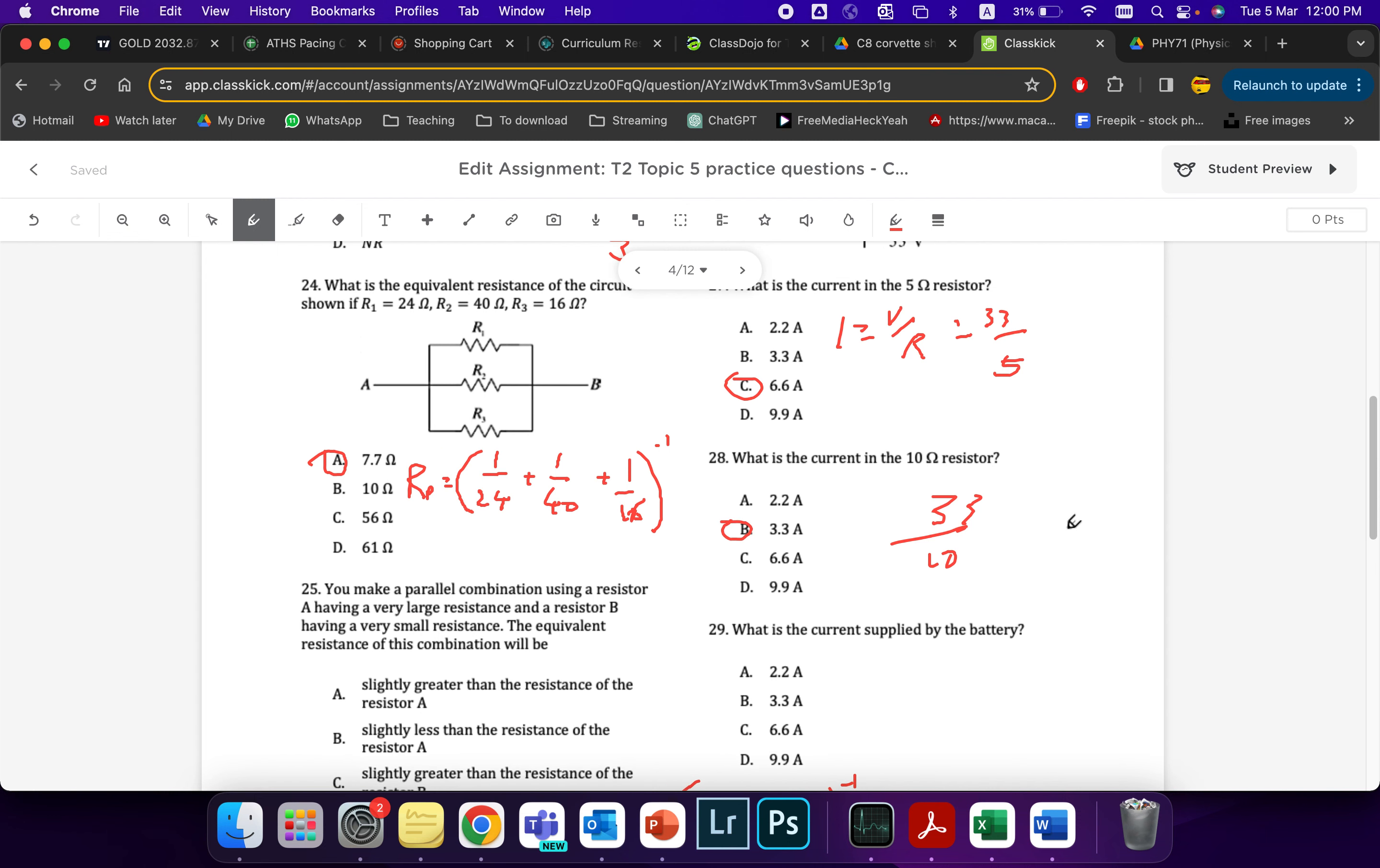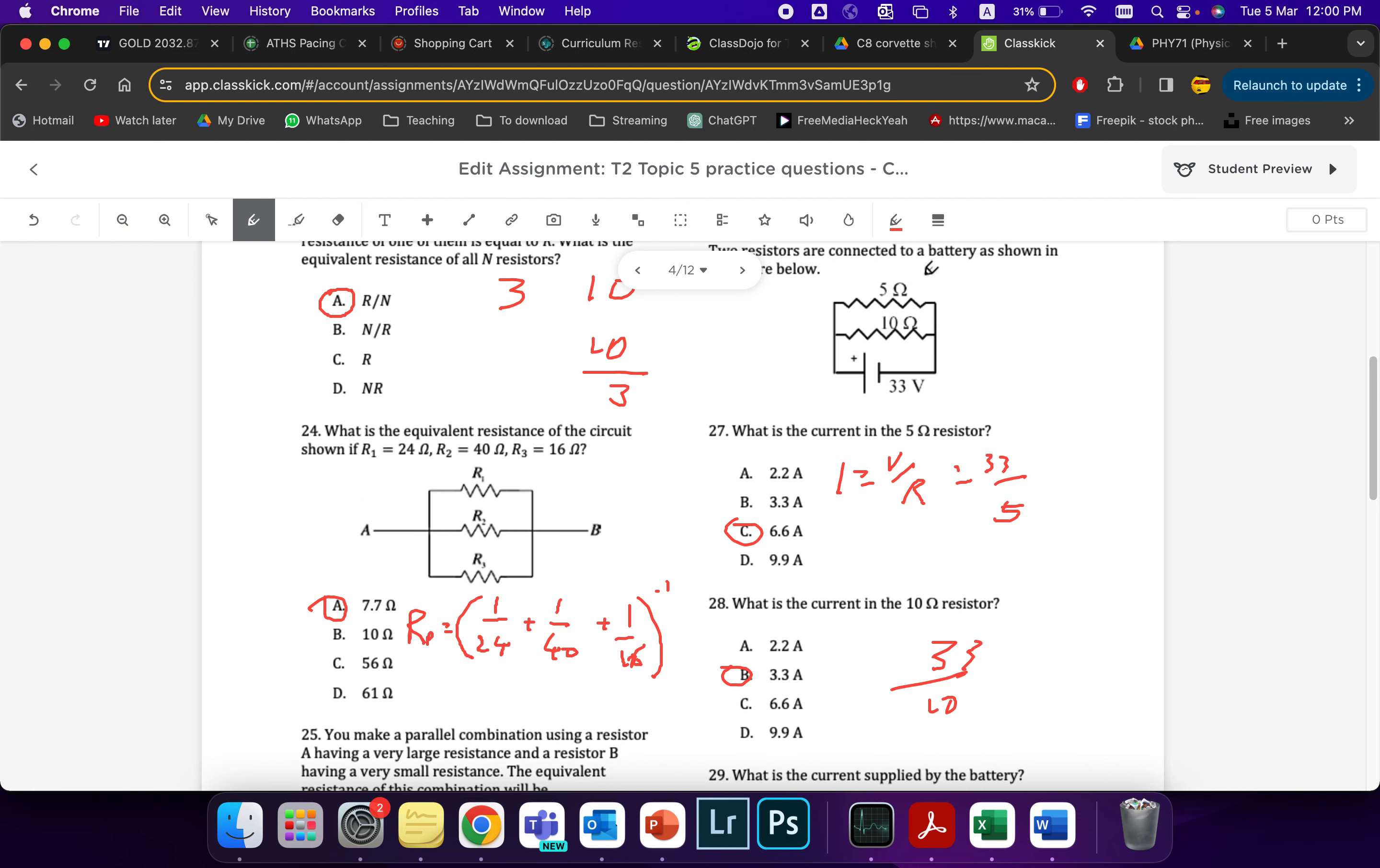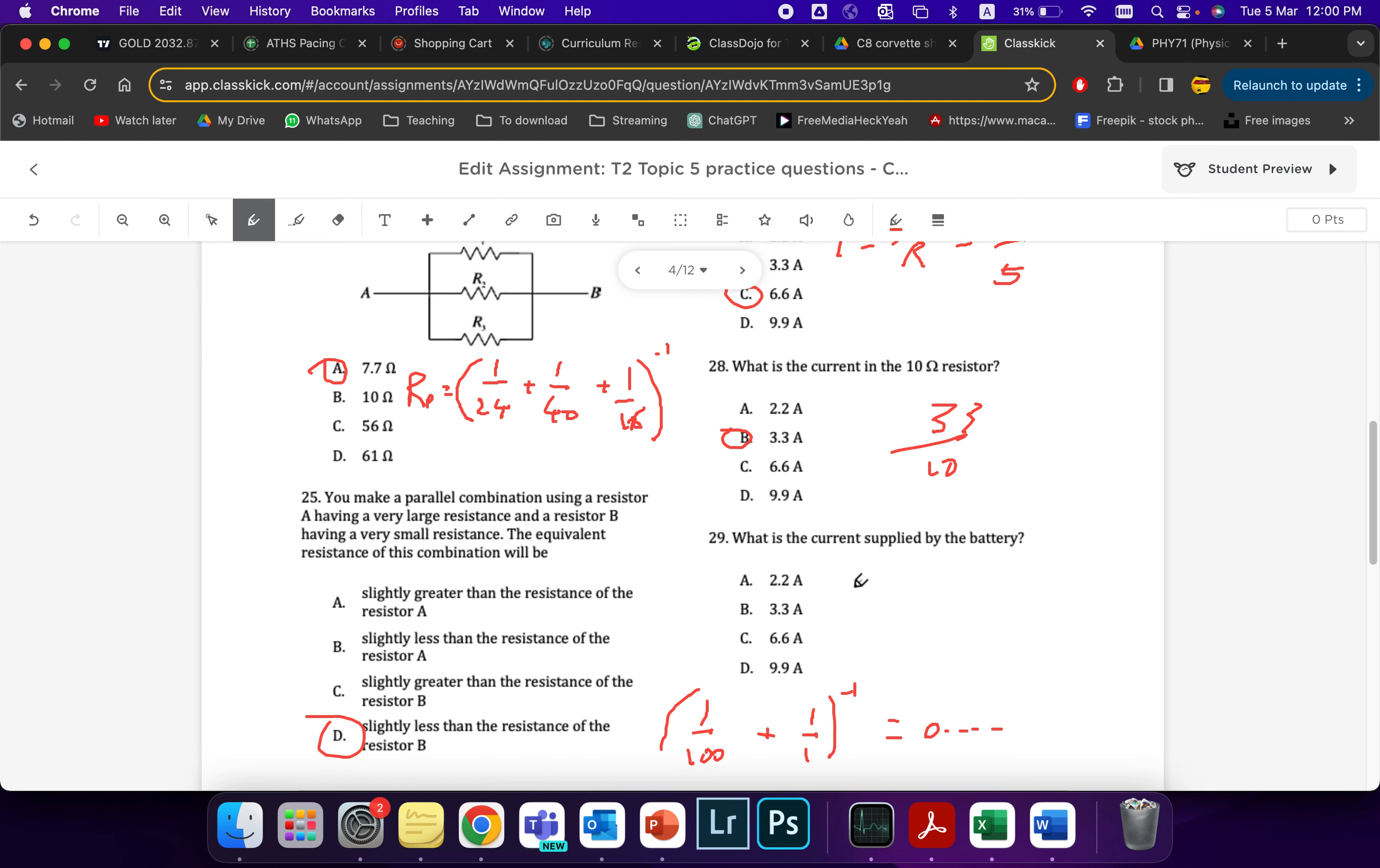What is the current supplied by the battery? Okay, well now that I have individual currents, I have 6.6 and 3.3. Well I don't need to do 1 over 10 plus 1 over 5 and then V divided by R. No need. I just add them together because the current flowing here and the current flowing here are going to meet up and go through the battery. So that means I can just add 6.6 plus 3.3, of course, is 9.9. I1 plus I2 equals I_total. 9.9. Very good.